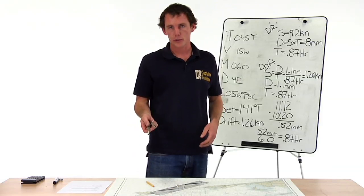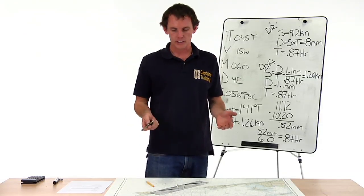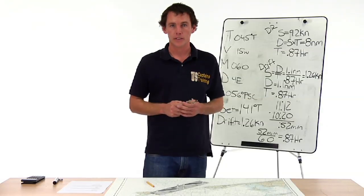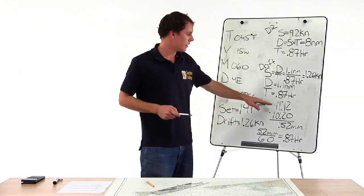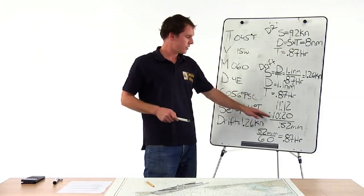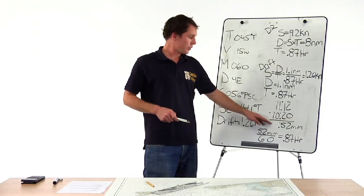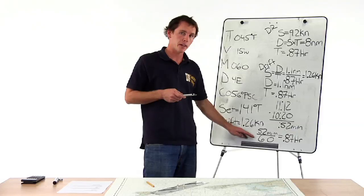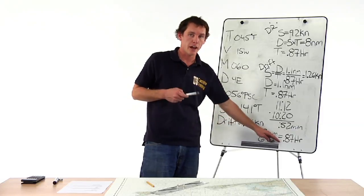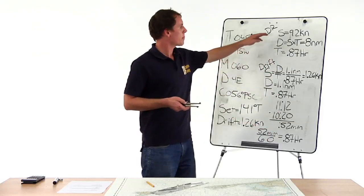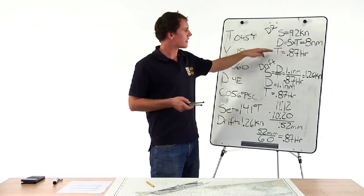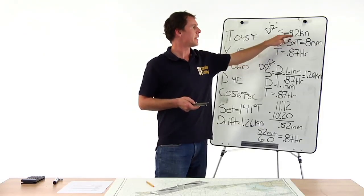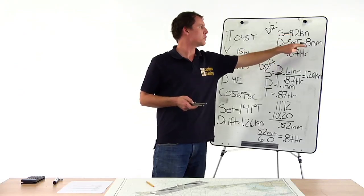How far down that course should we have gone? We need to calculate a distance. Distance equals speed times time. We have an elapsed time — ending time minus starting time: 1112 minus 1020 equals 52 minutes. To use our formula, we convert minutes to hours: 52 divided by 60 equals 0.87 hours. Distance equals 9.2 knots times 0.87 hours equals 8 nautical miles.